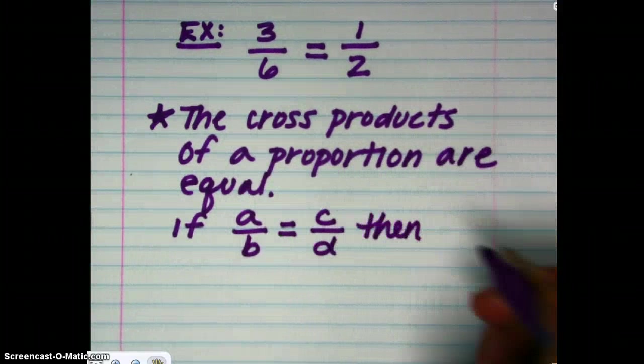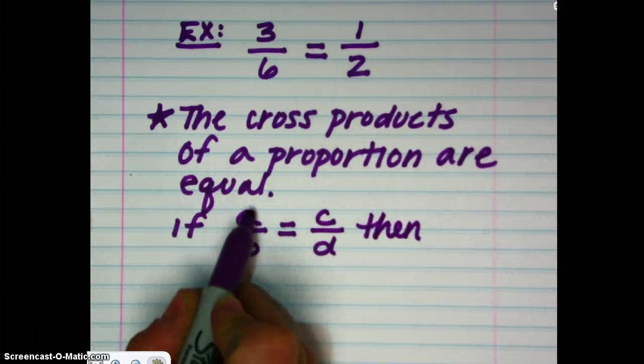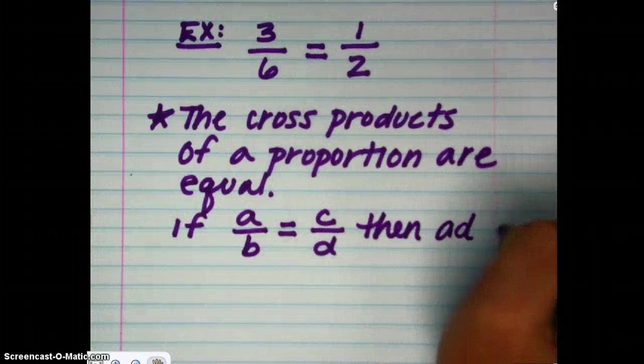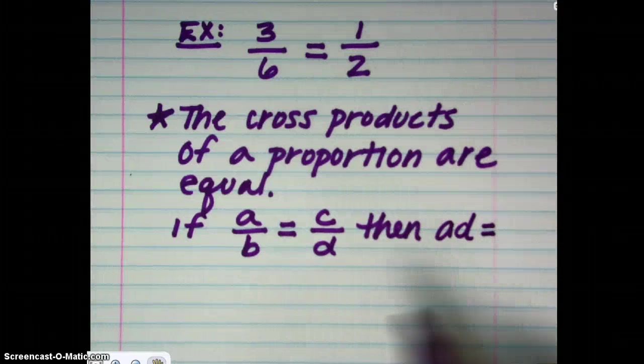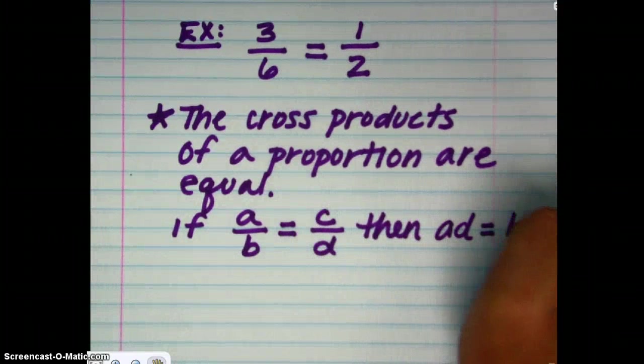...then their cross products are equal. In other words, the cross products here, A times D, or AD, is equal to the other cross products, B times C, or BC.